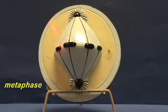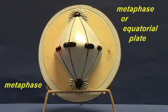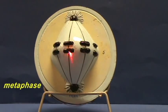This is referred to as the metaphase plate or the equatorial plate. Each of these replicated chromosomes, which are called chromatids, are going to separate from one another.